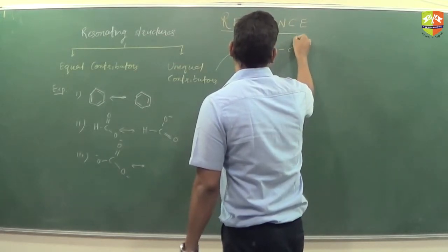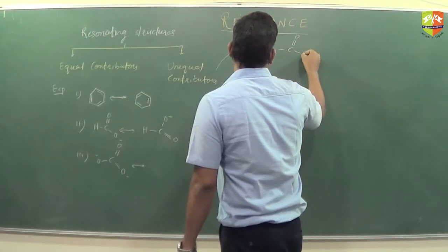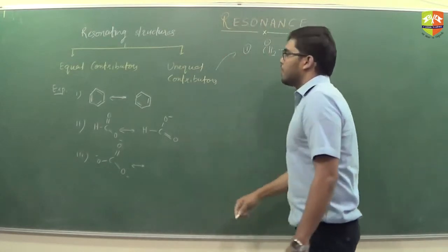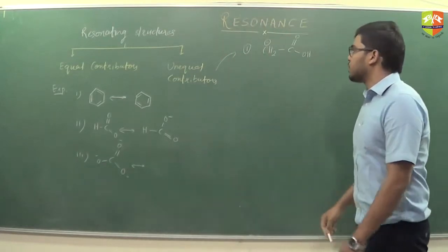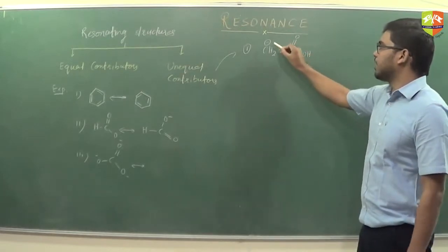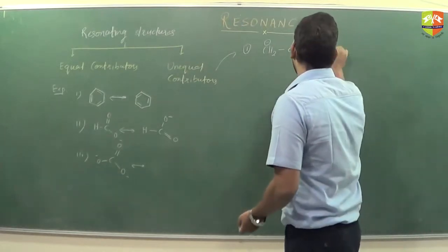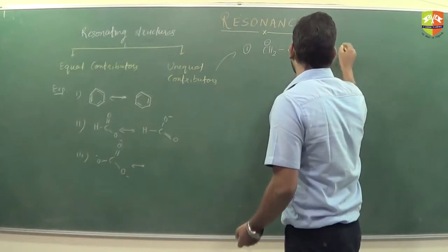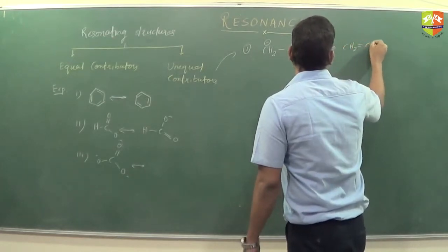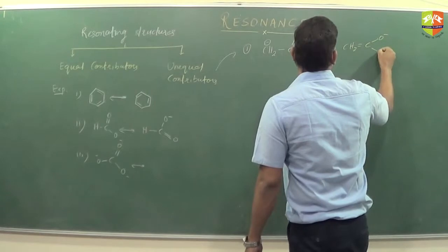Resonance is possible through the pi electrons, sigma framework, and negative charge. If you draw the resonating structure of this, it would be CH₂ double bond C, single bond O minus, OH — and another resonating structure can also be drawn from here.